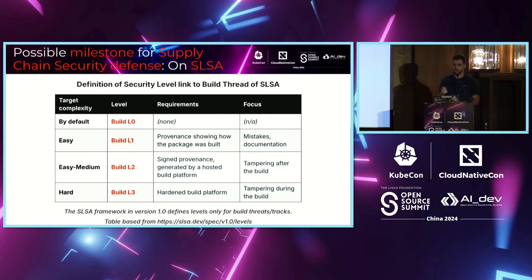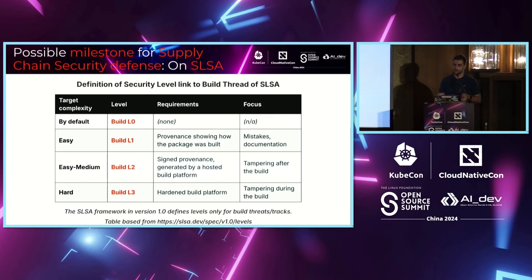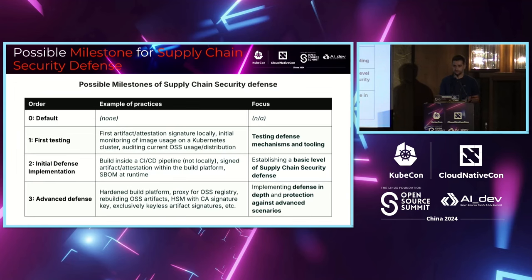For a first true level of security, you need Build Level 2. Here you still have the provenance JSON file, but you must sign it with your key and generate it inside your build platform — for example, inside a GitHub Actions pipeline. This signed provenance shows it came from your organization and protects against tampering after the build. Build Level 3 requires a protected build platform — ensuring no one can edit code at runtime, no one is logged into your runner making modifications — protecting against tampering during the build itself.